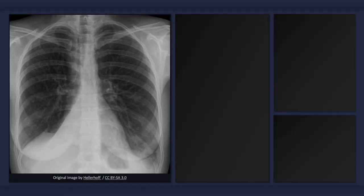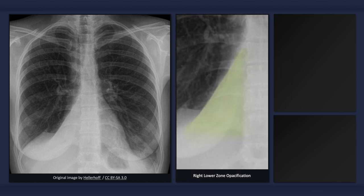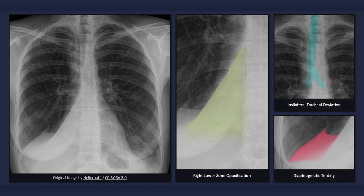To quickly recap, on an X-ray depicting right lower lobe atelectasis we might expect to see right lower zone opacification with effacement of the borders between the lung and both the heart and the medial aspect of the right hemidiaphragm, and signs of decreased lung volume such as ipsilateral tracheal deviation and diaphragmatic tenting.